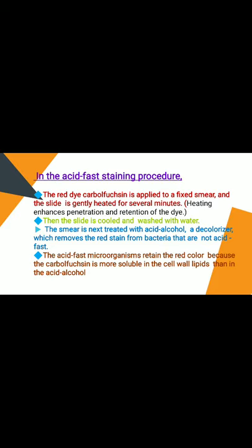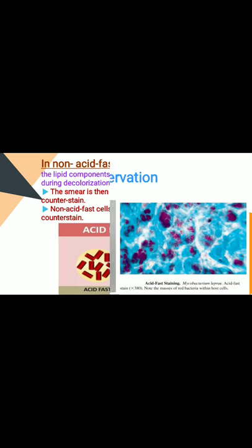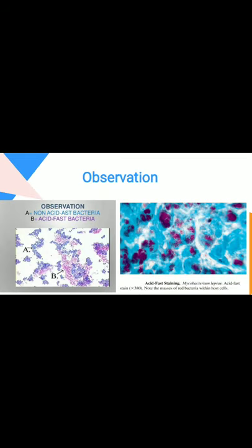Acid-fast staining procedure: the red dye carbol fuchsin is applied to a fixed smear and the slide is gently heated for several minutes — heating enhances penetration and retention of the dye. The slide is cooled and washed with water. The smear is treated with acid-alcohol as a decolorizer, which removes the red stain from bacteria that are not acid-fast. Acid-fast microorganisms retain the red color because carbol fuchsin is more soluble in the cell wall waxes than in the acid-alcohol. Non-acid-fast bacteria, whose cell walls lack the lipid component, lose the stain during decolorization and become colorless. The smear is then counter-stained with methylene blue, so non-acid-fast cells appear blue and acid-fast bacteria appear red.